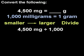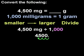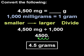Remember that when dividing by a power of 10, we can simply count the number of zeros in the power of 10 and move the decimal point that many places to the left in order to find the answer. Since there are three zeros in 1,000, we move the decimal point in 4,500 three places to the left to get 4.5. So 4,500 mg is equal to 4.5 grams.